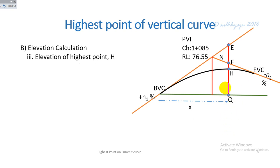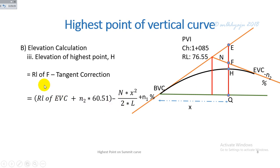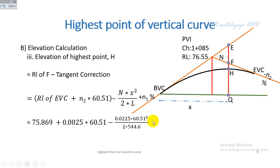The elevation of the highest point H is calculated as: RL of H = RL of end of vertical curve + n2 × x − tangent correction, where tangent correction = (N / 2L) × x². Substituting x = 60.51 m, the elevation of the highest point on the summit curve is calculated as 75.944 m.